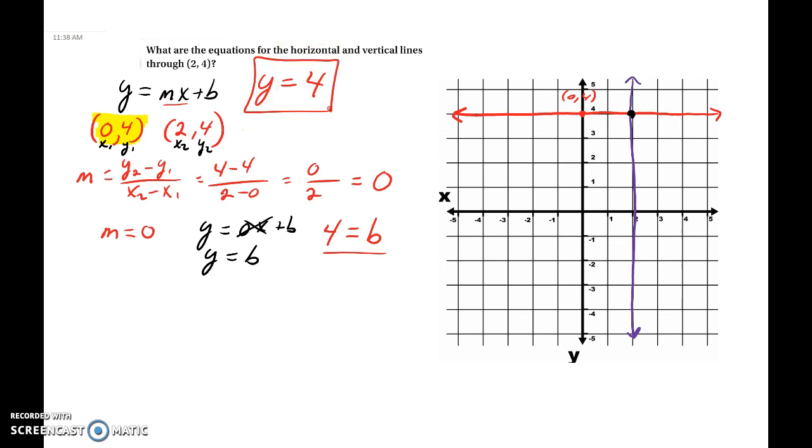Alright, so when we have a horizontal line, our equation is just y equals, and then it'll be equal to whatever y value we have. See how both of these, our y value is 4? So it's y equals 4. For horizontal lines, it's always going to be written as y equals 4.